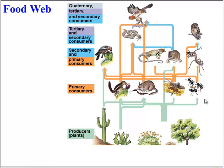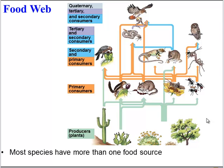This food chain is a bit of a simplification, because in reality feeding relationships are more complex. A food web does a better job of showing the complex relationships in an ecosystem. As you can see from this food web, most species have more than one food source — this animal can eat multiple types of plants, and this hawk hunts various types of animals. A food web shows all those connections.